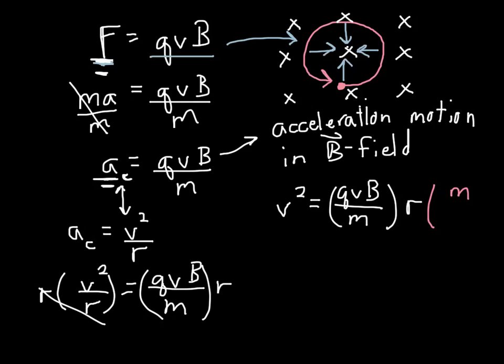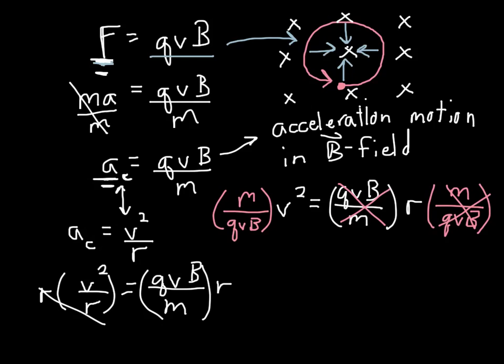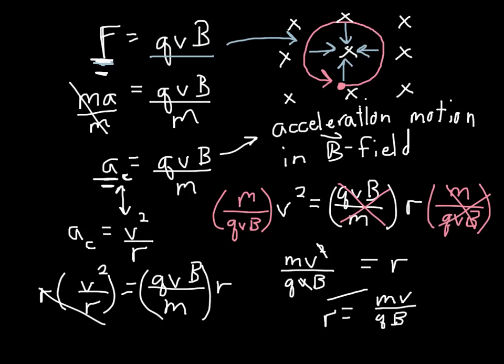I want to get r by itself, so I multiply both sides by m over qvB. My m and qvB cancel on the right-hand side, and I find an equation for my radius: m times v squared over q times v times B. One v cancels with the v in the denominator, and my final equation shows the radius of this circular path is r equals m times v divided by q times B.